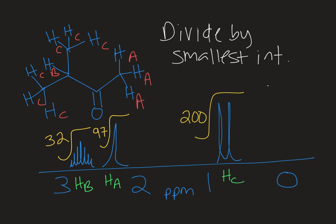So I'm going to take 97 and divide by 32, and that gives me about a ratio of 3 to 1. Now in an actual experimental NMR, the integrations are not going to be perfect.